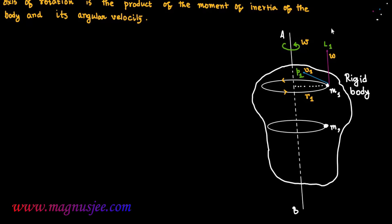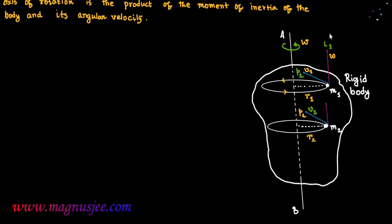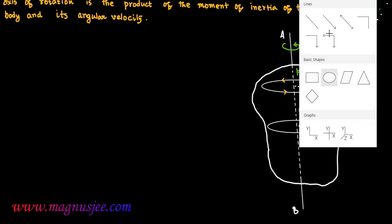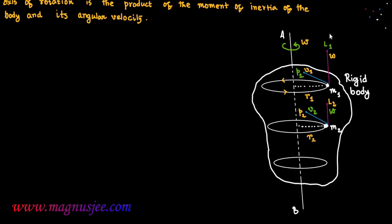The second constituent particle of mass m2 revolves in an imaginary circular orbit of radius r2. This second constituent particle has linear velocity v2 and linear momentum p2, which act inwards, as the particle revolves in a horizontal circular orbit anticlockwise. Omega is the same angular velocity for all constituent particles. L2 is its angular momentum.